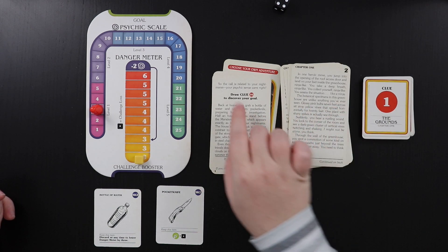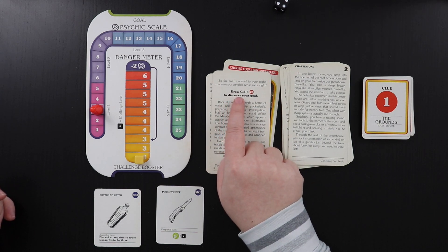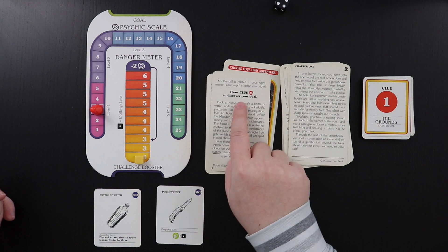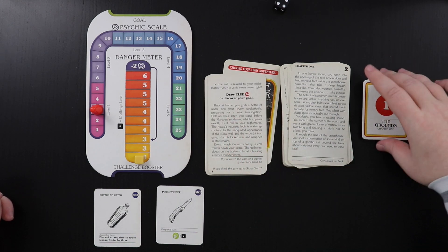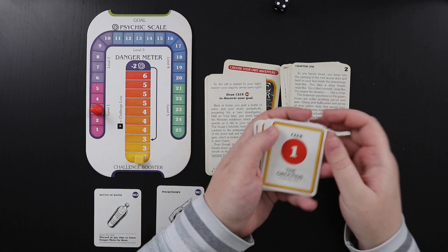So we'll continue on the back. So the call is related to your nightmares. Your psychic senses were right. So now you're going to draw a clue to discover your goal, and I'll just go through this. It's not the end of the world. If you know the goal of this first chapter, you'll still be able to enjoy the game. We'll stop right here.